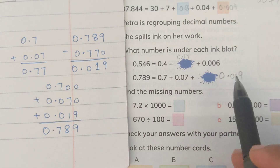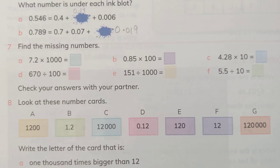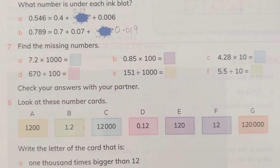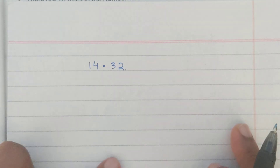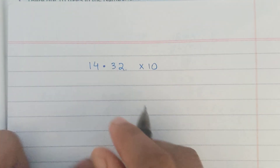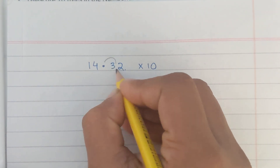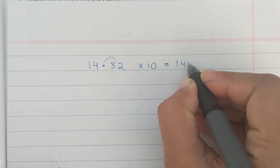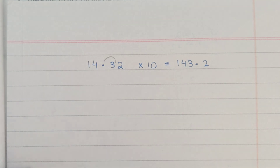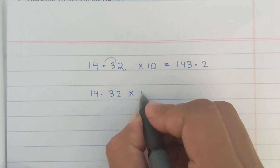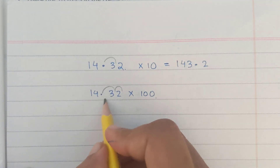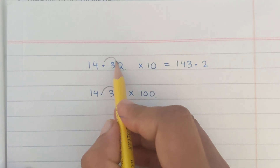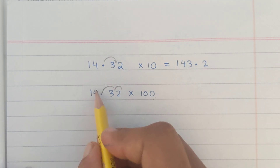Whenever the expanded form has a missing number, always use this technique. Now, let's learn what happens when we multiply or divide by 10, 100, or 1000. Take the number 14.32. When multiplying by 10, the decimal moves one place to the right, giving 143.2. Multiplying by 100 moves the decimal two places to the right — the number of zeros directly corresponds to the decimal movement.